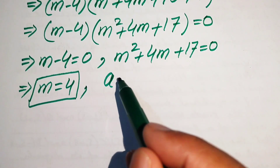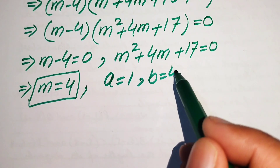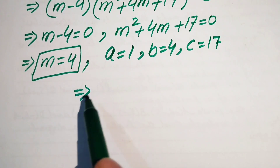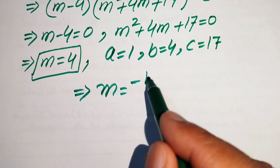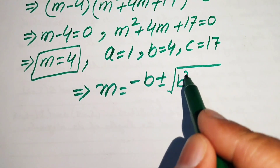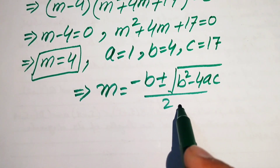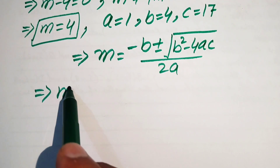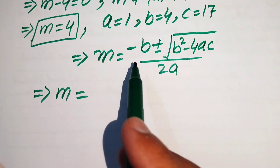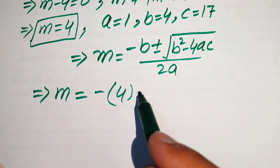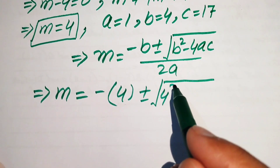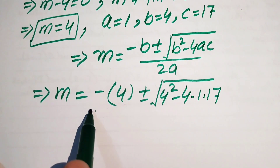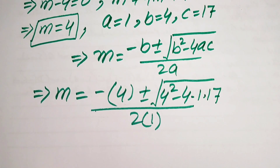For the quadratic m² + 4m + 17 = 0, the coefficients are a = 1, b = 4, c = 17. We apply the quadratic formula: m = (-b ± √(b² - 4ac)) / (2a). Substituting the values: m = (-4 ± √(4² - 4·1·17)) / (2·1).